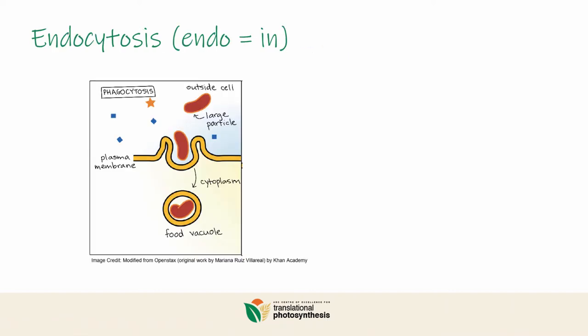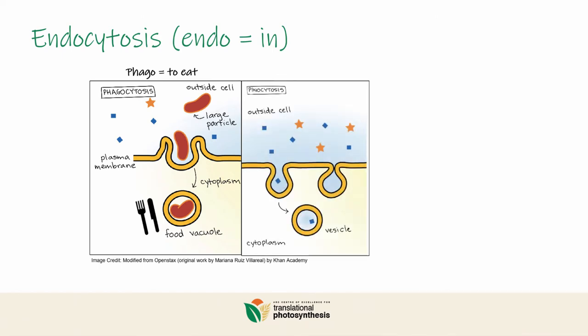There are three different forms of endocytosis. One is called phagocytosis, where the prefix phago means to eat — so phagocytosis is literally about cell eating. The second one is called pinocytosis, where the prefix pino comes from the Greek to drink. So pinocytosis is literally about cell drinking fluids with all the solutes that it contains.